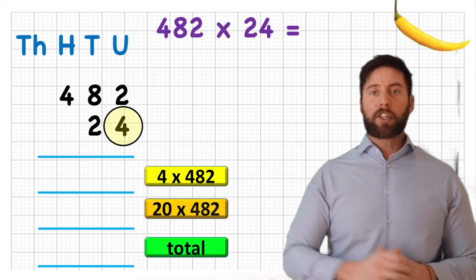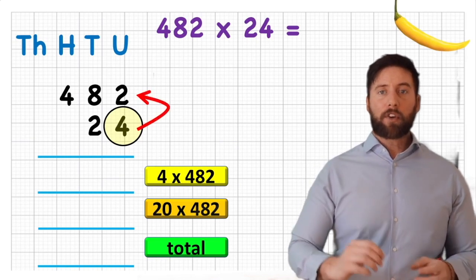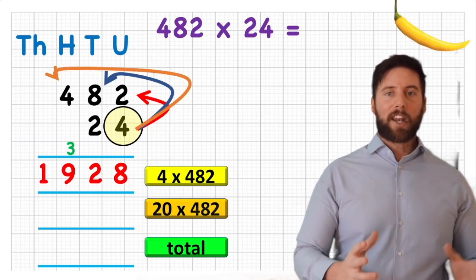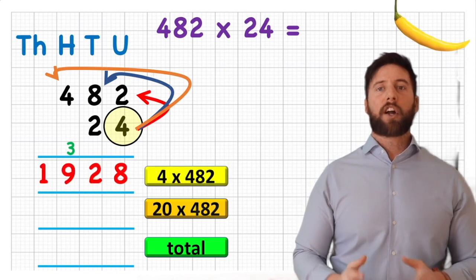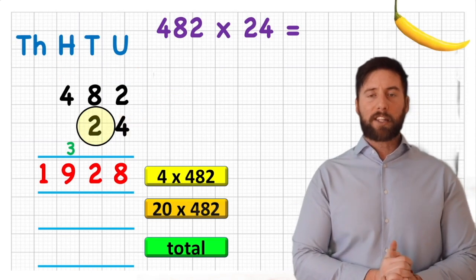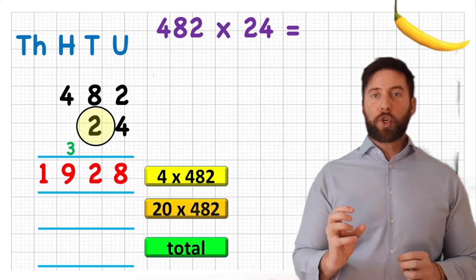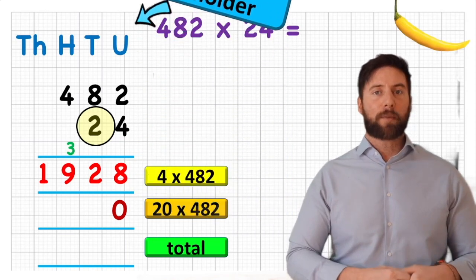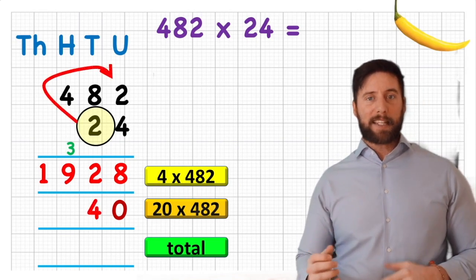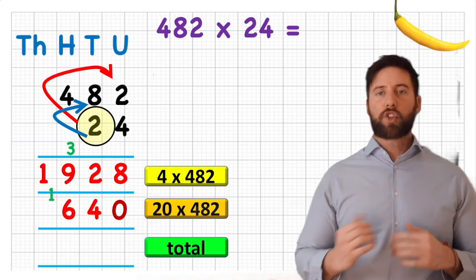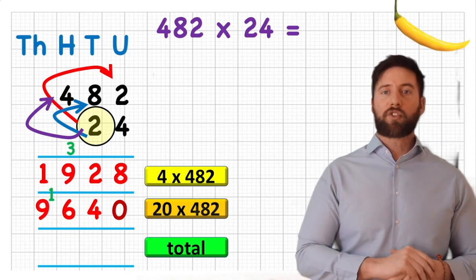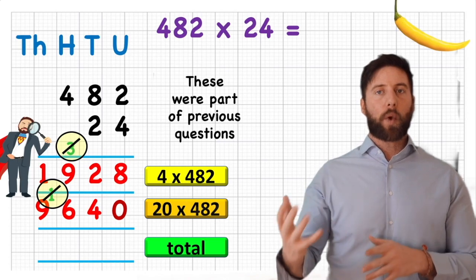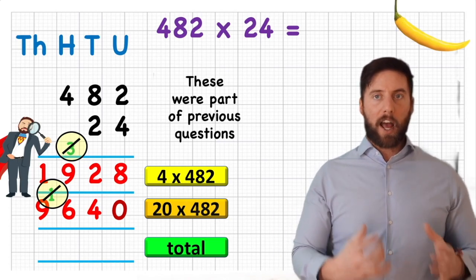Let's answer 482 times 24. Starting with 4 times 2 is 8. Then 4 times 8 is 32 — carry the 3 into hundreds and put 2 in tens. Then 4 times 4 is 16, add the 3 carried, gives 19. So 482 times 4 is 1928, completing the first row. Now for 20 times 482: we don't like 20, so put in the placeholder to make it 10 times smaller, meaning we just do 2 times 482. So 2 times 2 is 4, 2 times 8 is 16 — carry 1, put 6 in place — and 2 times 4 is 8 plus the 1 is 9, giving 9640.